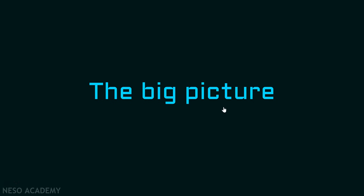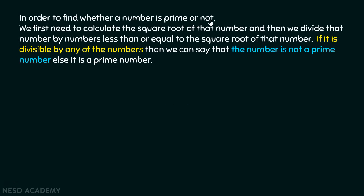Now the big picture. In order to find whether a number is prime or not, we first need to calculate the square root of that number. Then we divide the number by numbers less than or equal to the square root of that number. If it is divisible by any of those numbers, then the number is not a prime number; else it is a prime number.